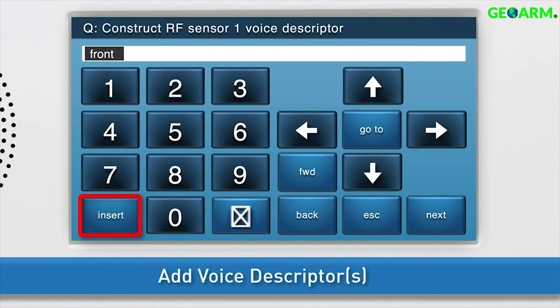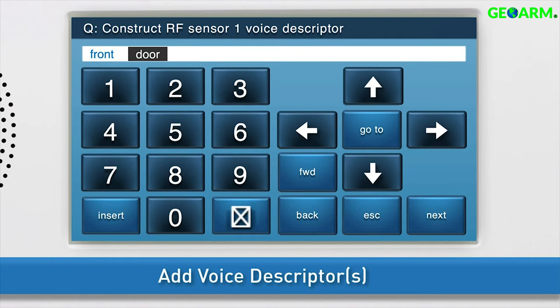To add another word, press insert again and repeat the steps just discussed. You can add up to five words. Once the desired word or words displays in the answer box, press the down arrow to go to the next sub-question.